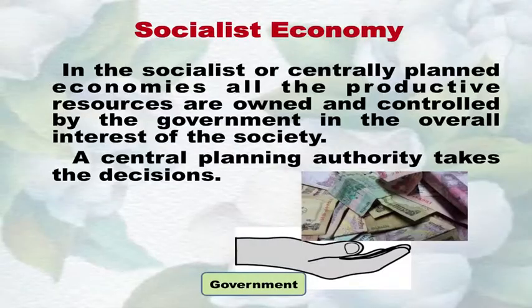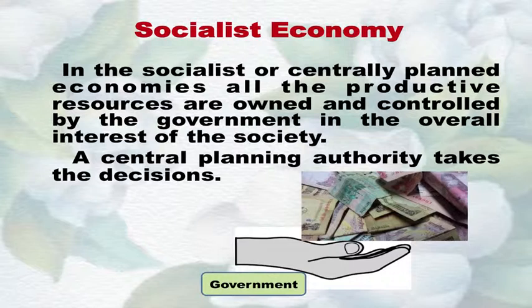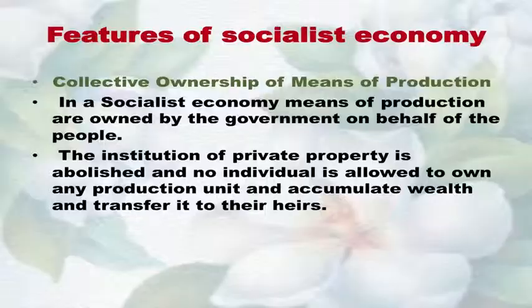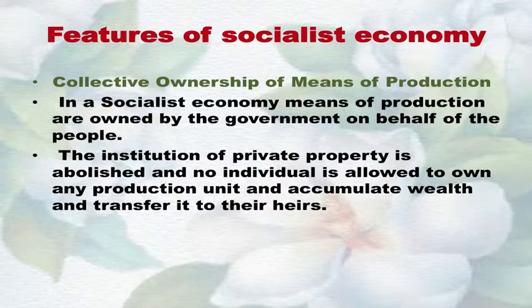Second type of economy is the socialist economy. In the socialist or centrally planned economy, all productive resources are owned and controlled by the government in the overall interest of society. A central planning authority takes the decisions. Number one feature: Collective ownership of means of production — means of production are owned by the government on behalf of the people. The institution of private property is abolished and no individual is allowed to own any production unit or accumulate and transfer wealth to their heirs.